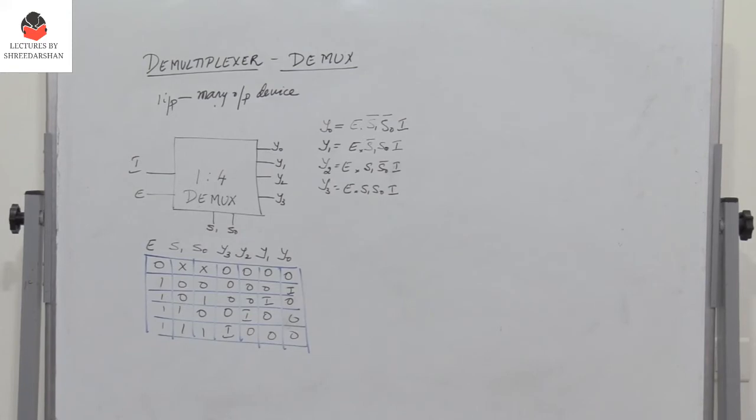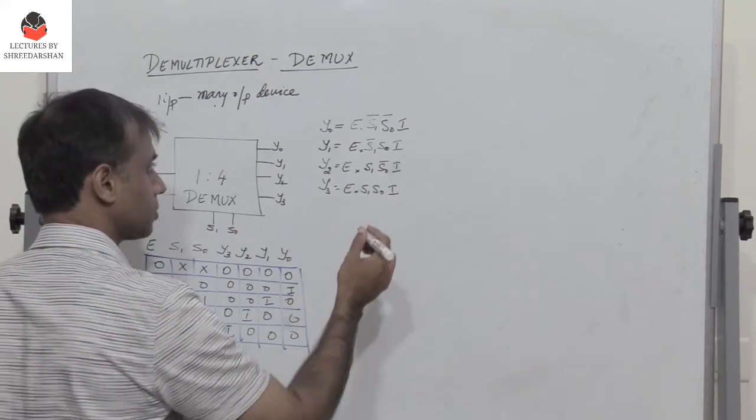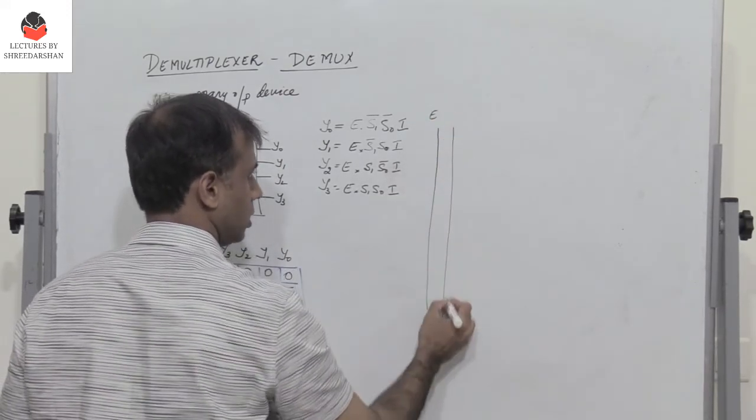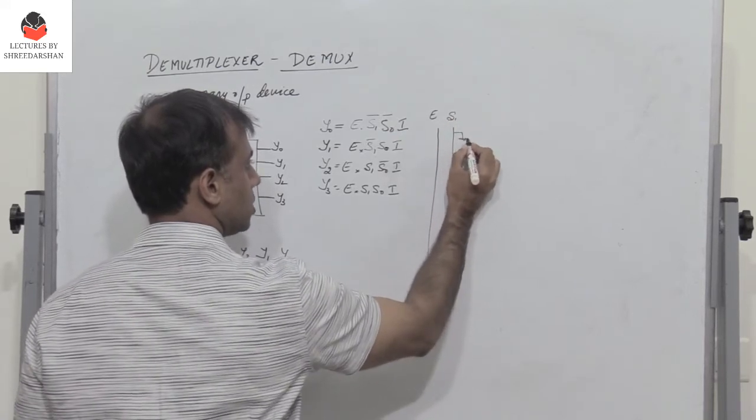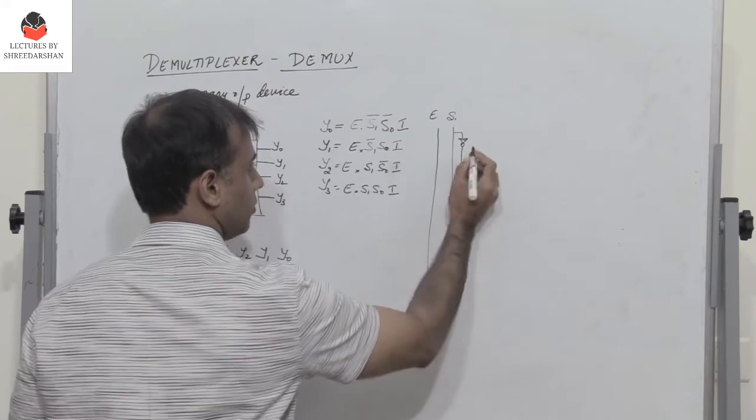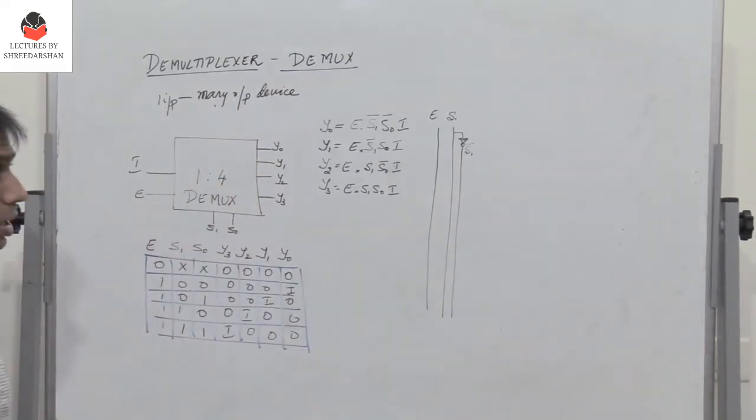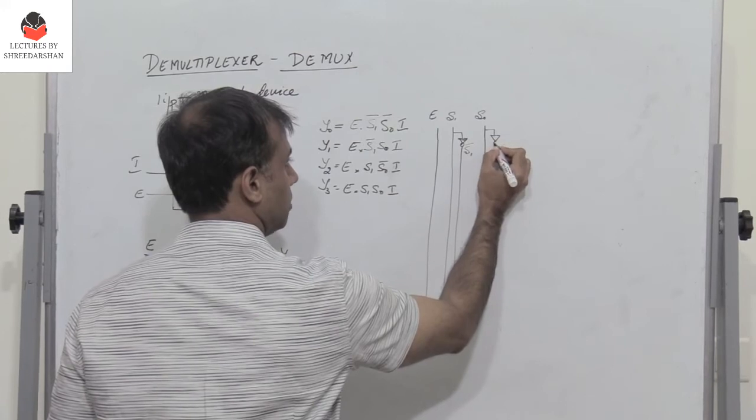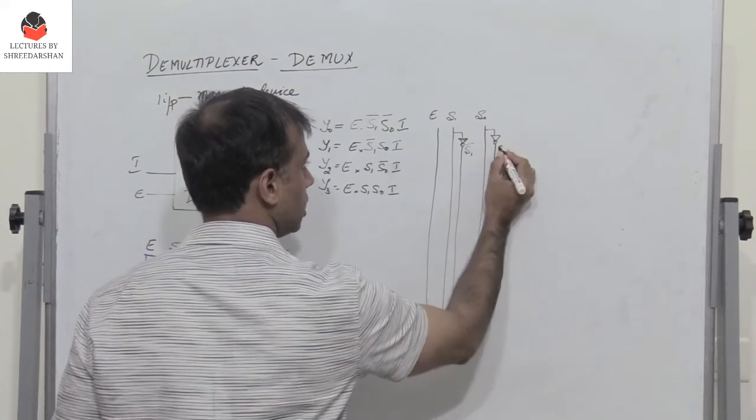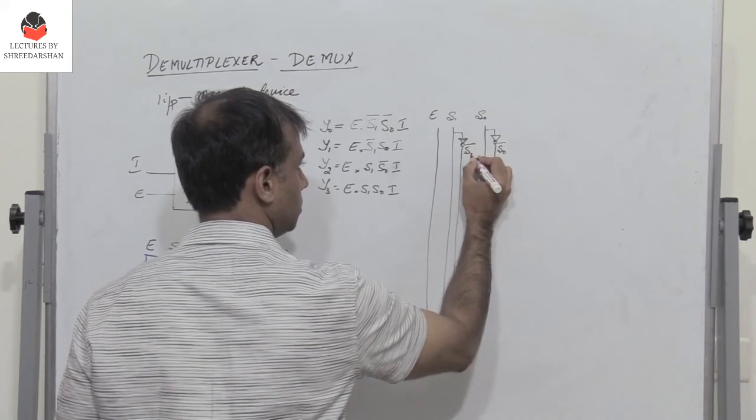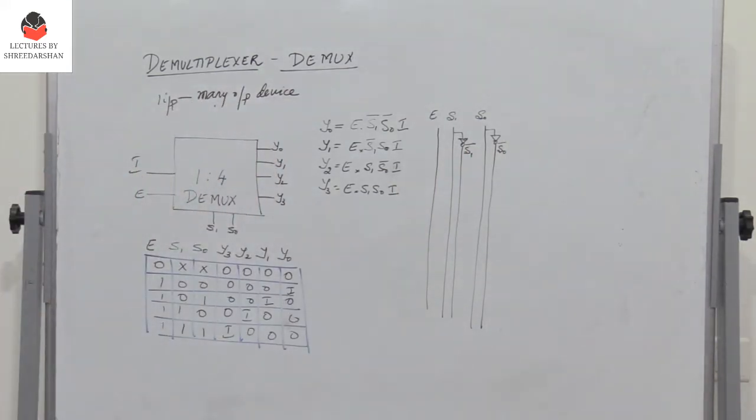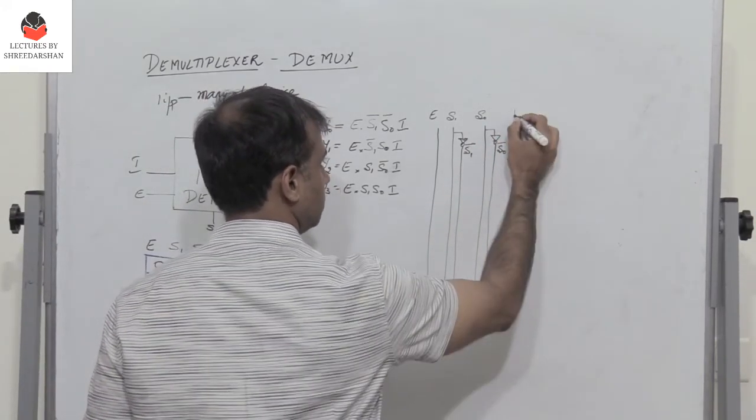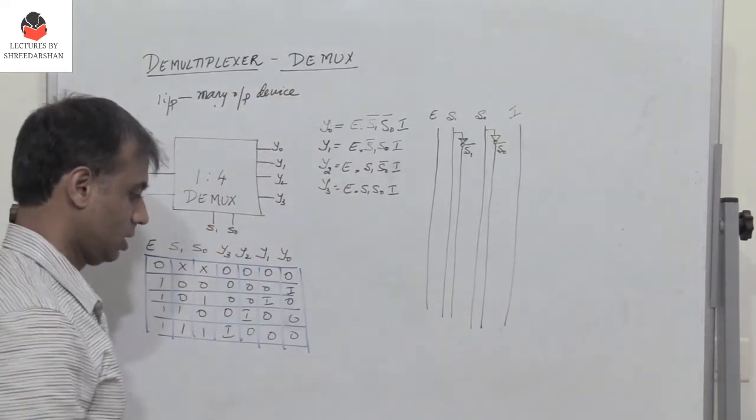So now how can we implement this? We can implement this very easily. So I have the enable e, and then we have s1. I need s1 bar, so pass it through an inverter. So I have s1, s1 bar. And then I need s0, the other select line, which is s0, and then s0 bar. Pass it through an inverter, so you get s0 bar. And then of course you have the input i.